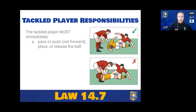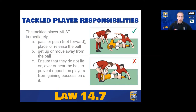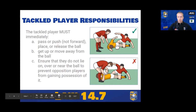The tackle player — the ball carrier — must immediately pass or push the ball (not forward), or place the ball in any direction, or release the ball. They can place it forward, for example to score a try near the goal line. The tackle player must also get up or move away. They need to ensure they don't lie on, over, or near the ball to prevent opposition players from getting possession. If they can't get up and move away, they must not do anything that prevents the opposition from getting it. The placing or playing of the ball should be immediate.